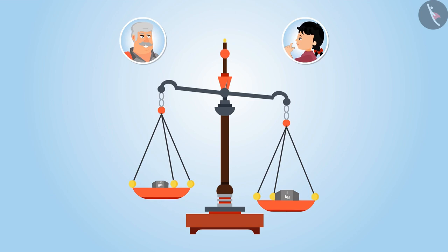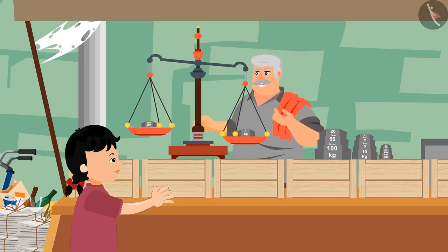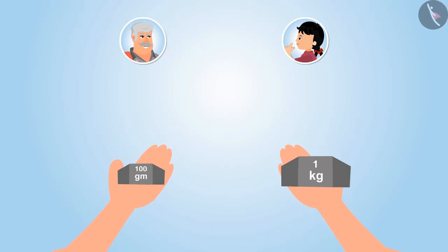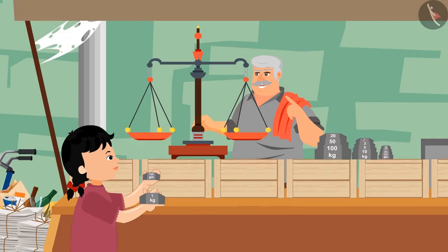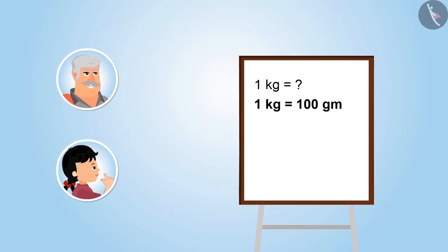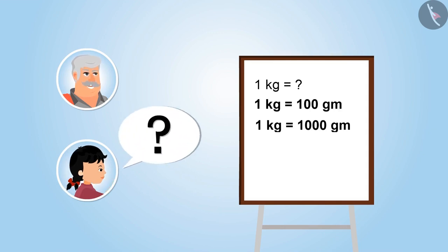Okay Neetu, try to lift both of them. While doing this, don't you feel the weight is different? Yes uncle, you are right. I haven't thought about this, but how is this possible? Because you are forgetting, that 1 kg is equal to 1000 grams, not 100 grams. Oh yes uncle, how did I forget this? 1 kg is equal to 1000 grams, not 100 grams.